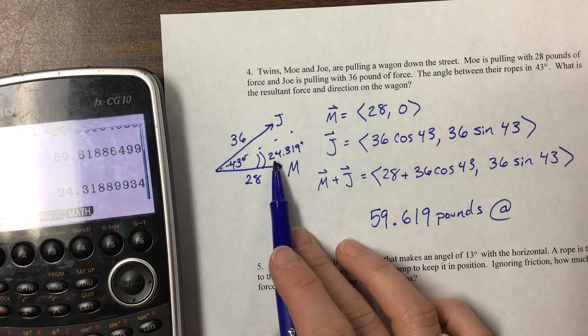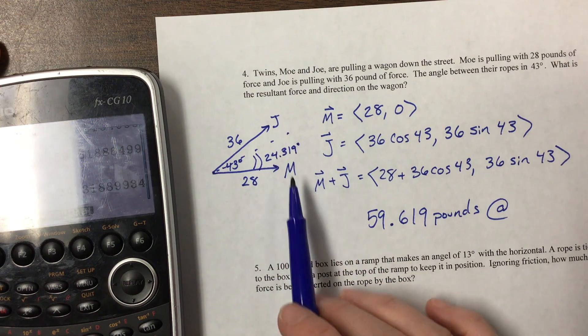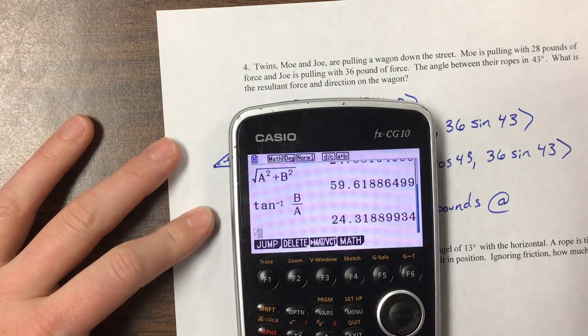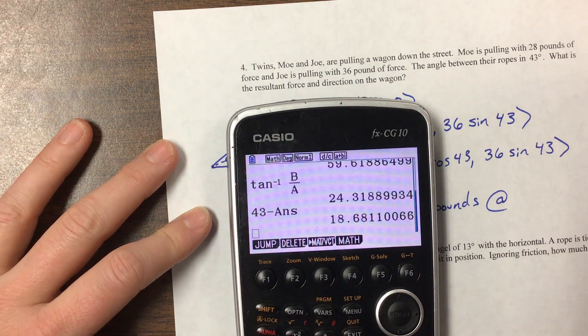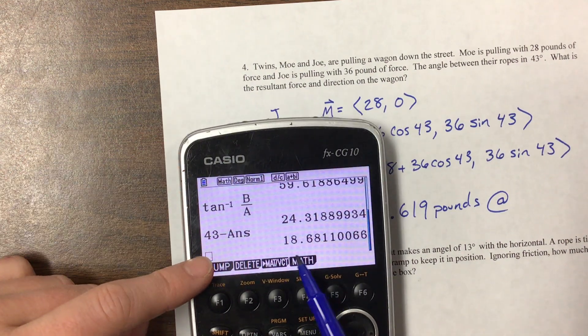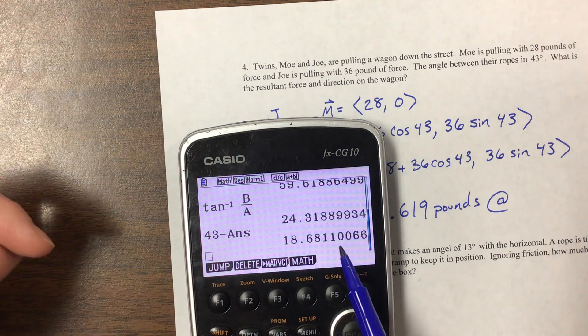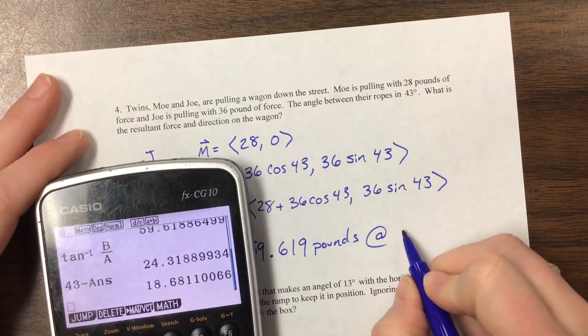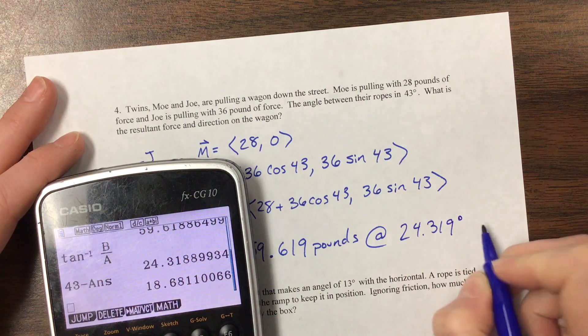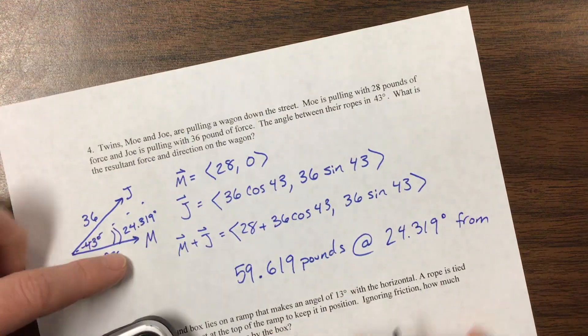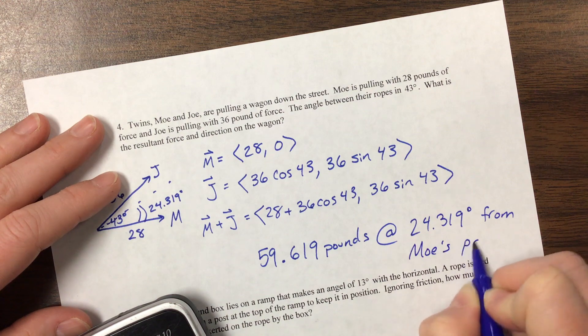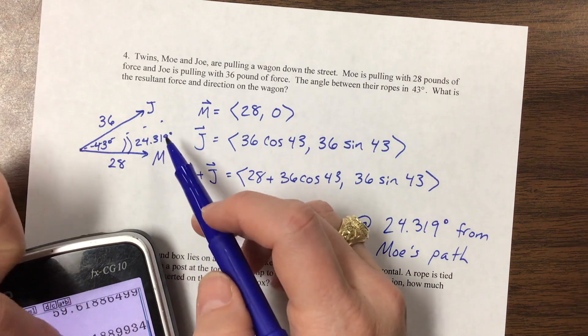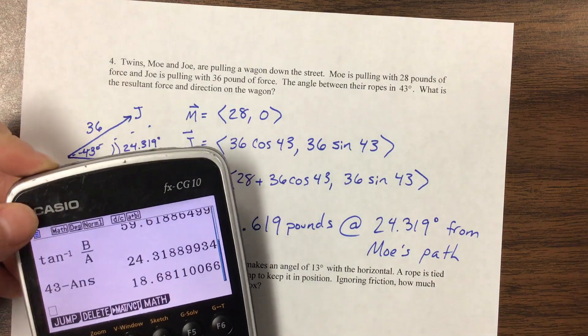That's 24.319 degrees from Moe. Now, if you had turned it around and put Joe down here at the bottom, then you're going to get a different answer. But what you would have gotten was this 43 minus that answer. So you could tell me that you're 18.681 degrees from Joe or 24.319 degrees from Moe's path, or however you want to describe that. So this side was 24.319. The other side would have been about 18.681.